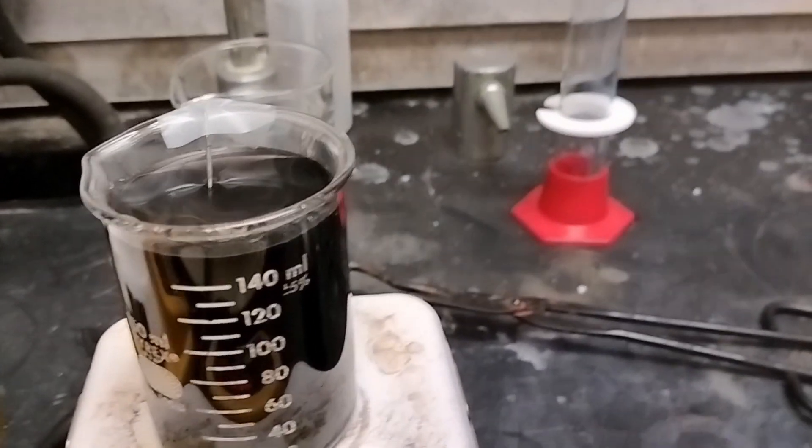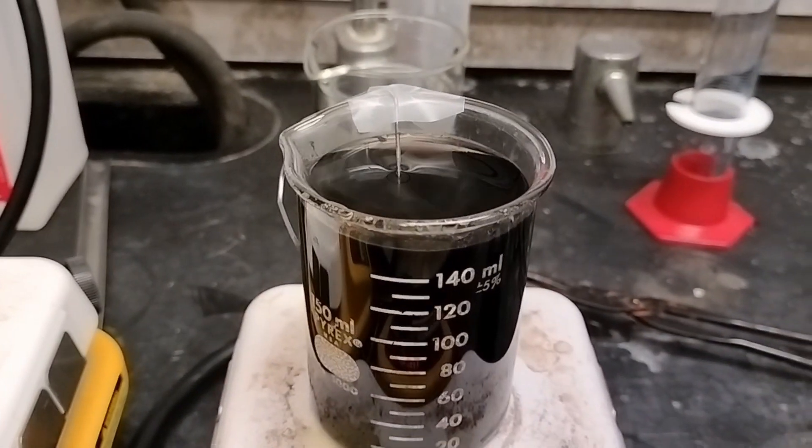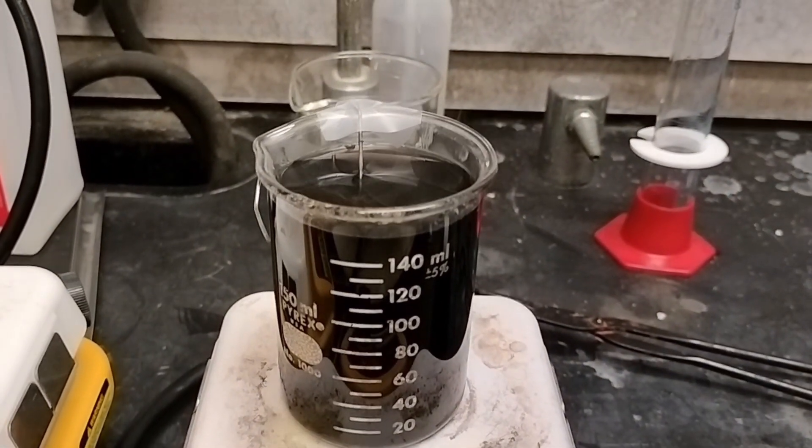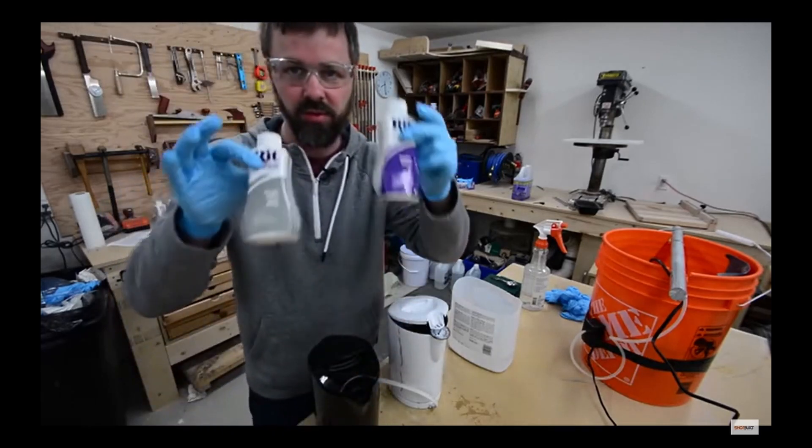After letting the reaction occur for about an hour, I put the part in dye at around 60 degrees Celsius. The anodizing process creates a negatively charged porous oxide layer. The positively charged dye flows into these pores, which is what gives the oxide layer the color of the dye.